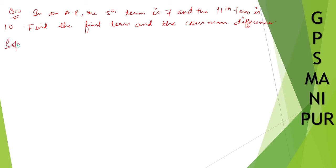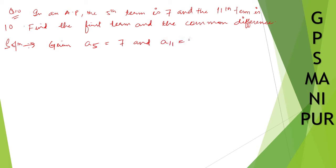Solution. What we know? We know the fifth term and eleventh term. Given: a₅ = 7 and a₁₁ = 10.